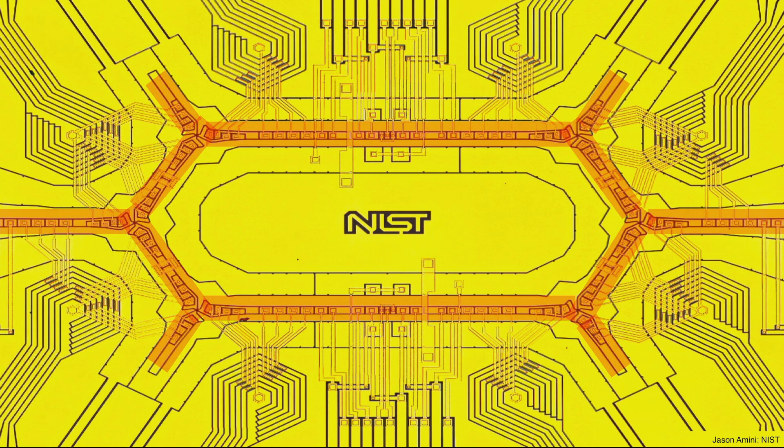What remains is to fabricate complex structures that can actually implement this computer, and advances are being made there too. In red, I've highlighted the regions where the atoms can be transported on this chip, and all the other things you see are connections for control signals. The beauty of this chip is that it was built using methods similar to those used to make the chips in your laptop. So we hope to stand on top of the electronics industry, which makes highly complex and well-developed devices, in order to build quantum computers.